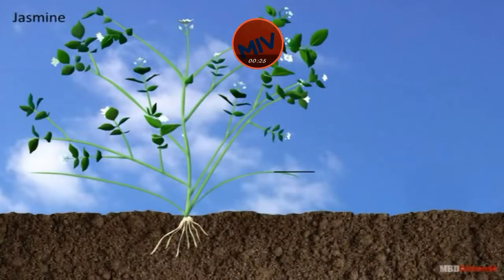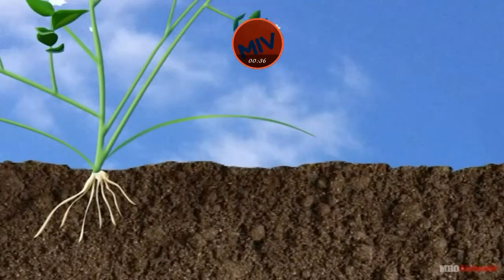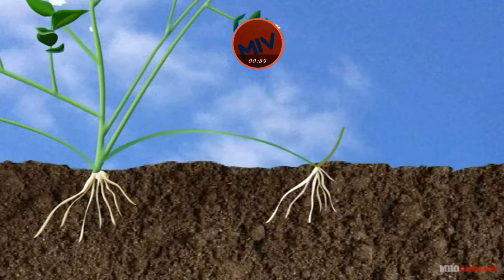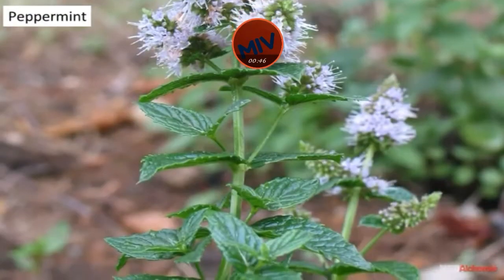Stolon is the modification of the stem in which it originates from the base of the crown, grows obliquely upwards just above the ground, and then bends down on coming in contact with the soil. It then grows adventitious roots below and a crown of leaves on top. It is seen in Jasmine, Peppermint, etc.